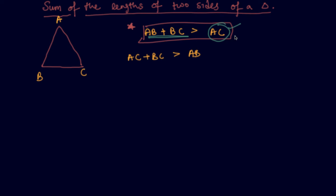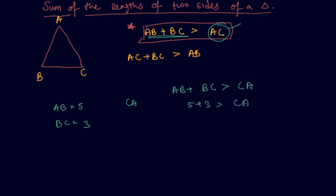Now let us look at how this question appears in an exam. We are given triangle ABC where AB equals 5 and BC equals 3, and we have to find CA. Using the property: AB plus BC should always be greater than CA. So 5 plus 3 is greater than CA, meaning CA is less than 8. Therefore the length of CA would always be less than 8 centimeters.